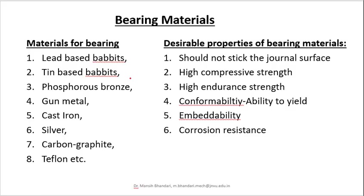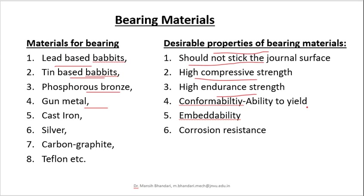Here are some bearing materials and their properties. Bearing materials include lead-based babbitt, tin-based babbitt, phosphorus bronze, gun metals, etc. The desirable properties of bearing materials are: the material should not stick to the journal surface; it should have high compressive strength; it should have high endurance strength since there are chances of fluctuating and fatigue loading; it should have the properties of conformability and embeddability; and it should have corrosion resistance.